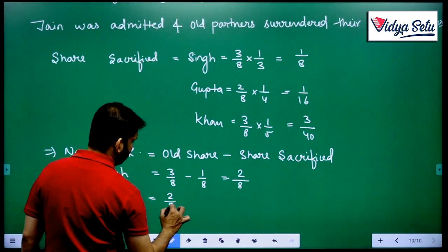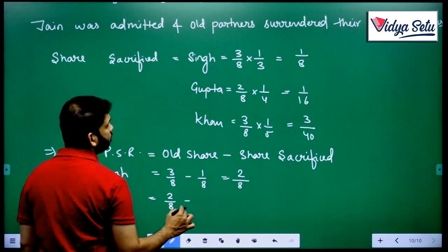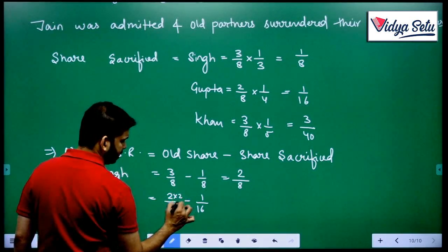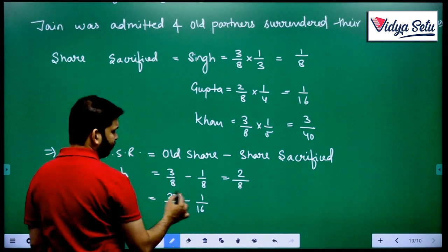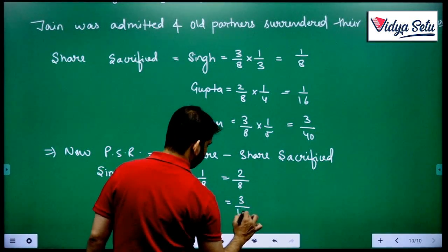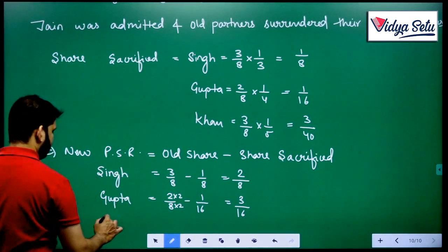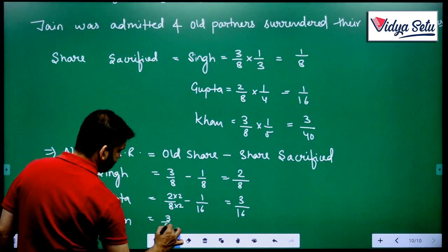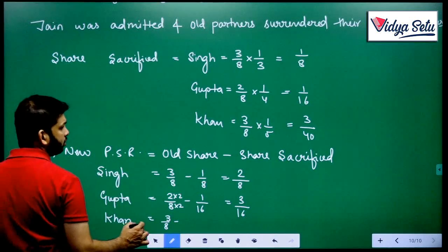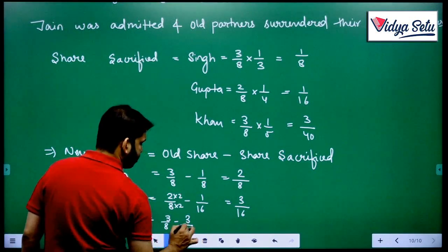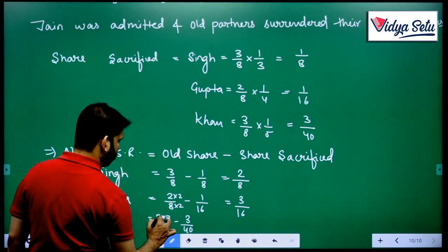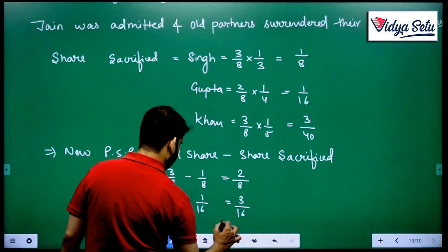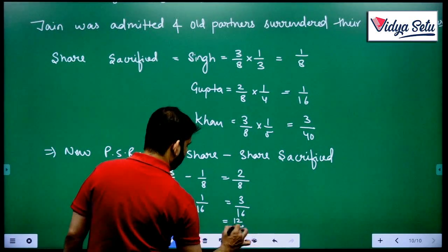Gupta is 2 by 8, he is surrendering 1 by 16, so let us make this 16: 4 minus 1 equals 3 upon 16. Khan was 3 by 8, he is also surrendering 3 by 40, so let us make this 40: 15 minus 3 equals 12 by 40.